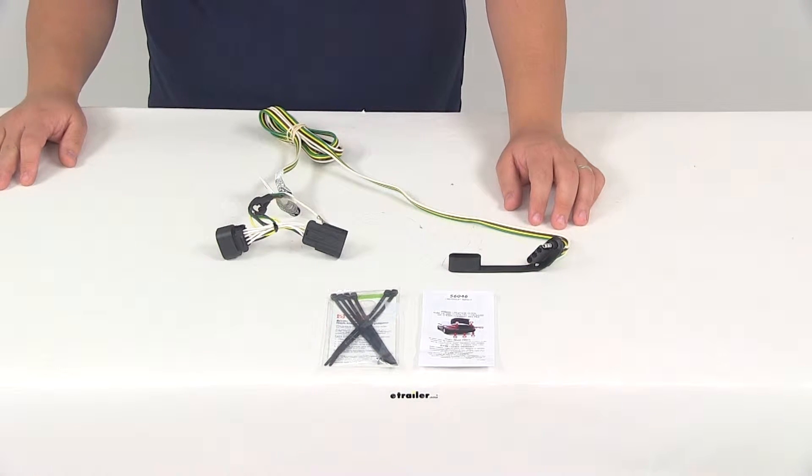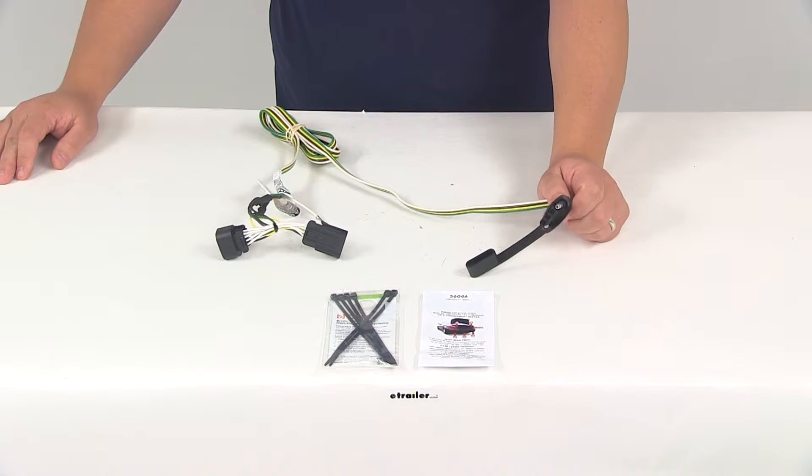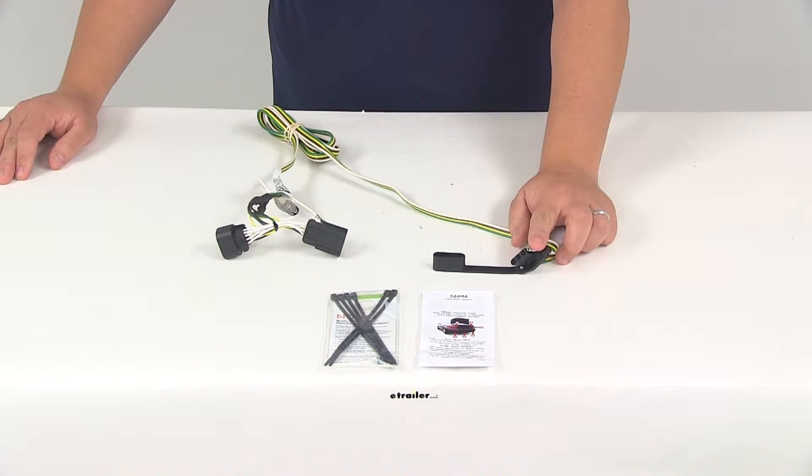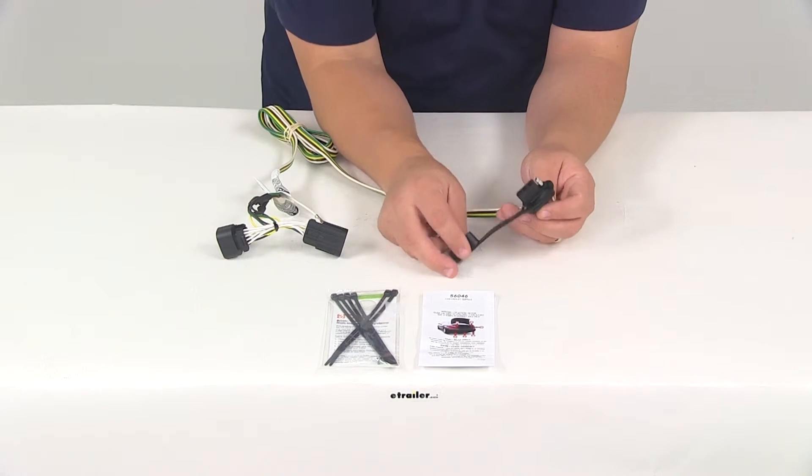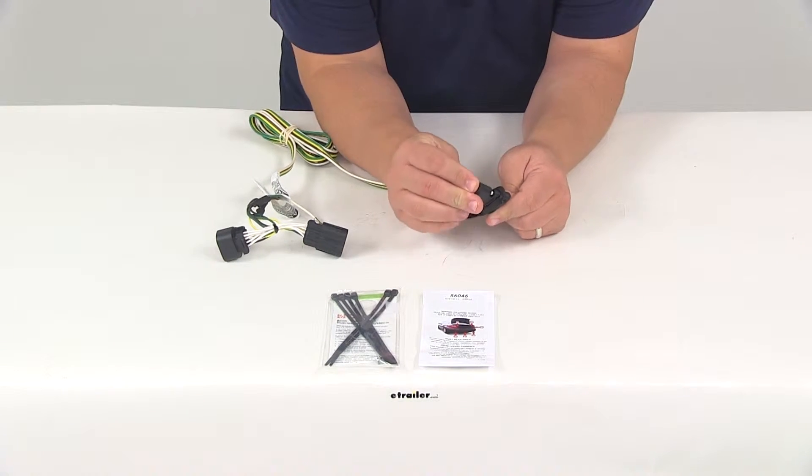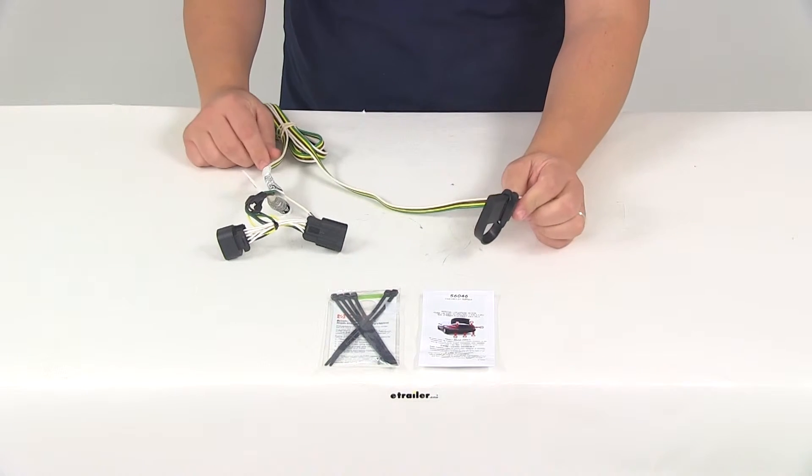It provides a four-way flat trailer connector at the back of the vehicle to power your trailer signal lights. This is compatible with five-pole, six-pole, and seven-pole adapters, which are sold separately. It comes with a dust cap for the four-way flat connector so you can cover those connection points when the plug is not being used.